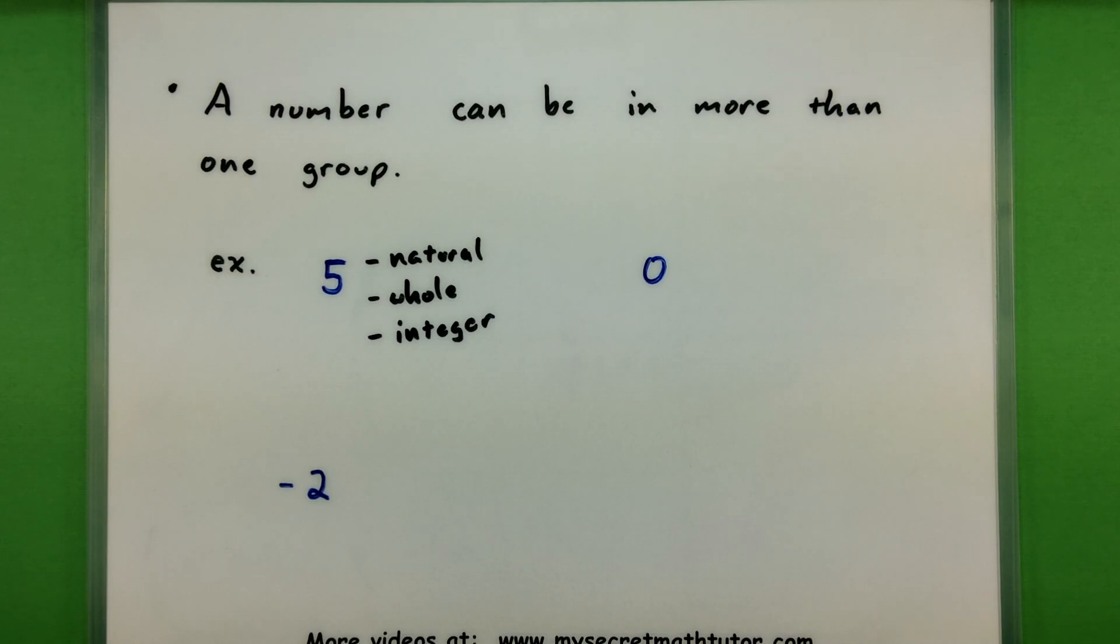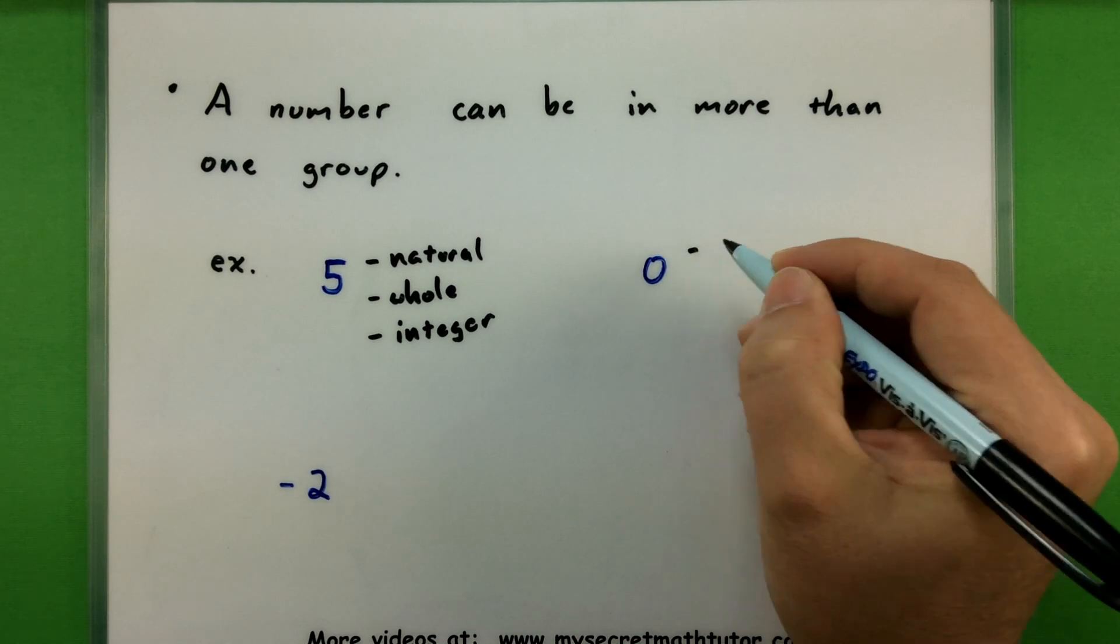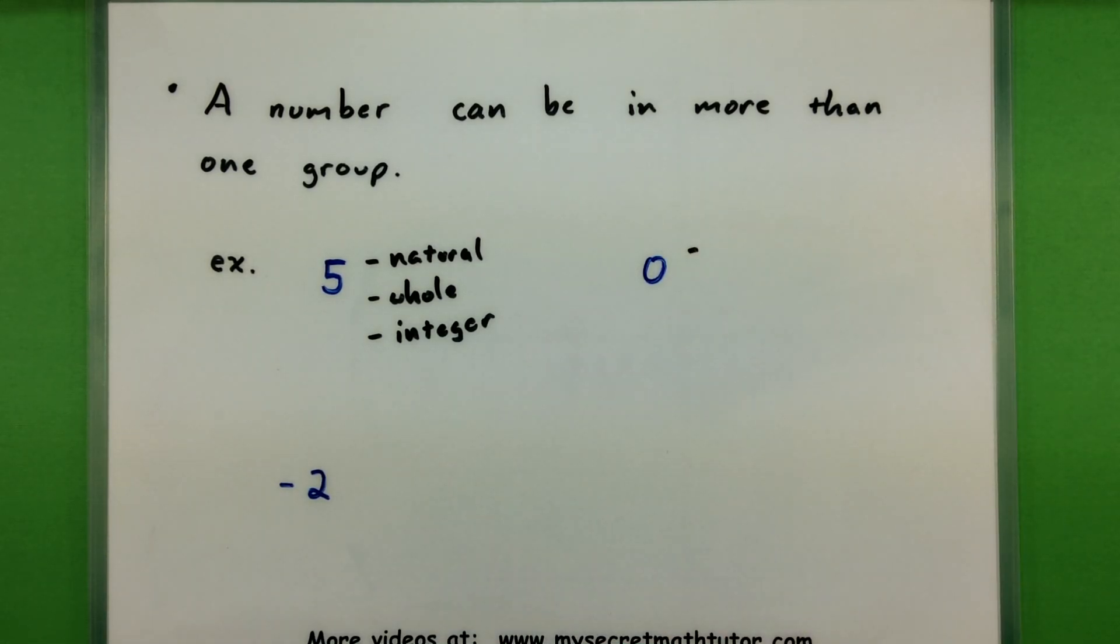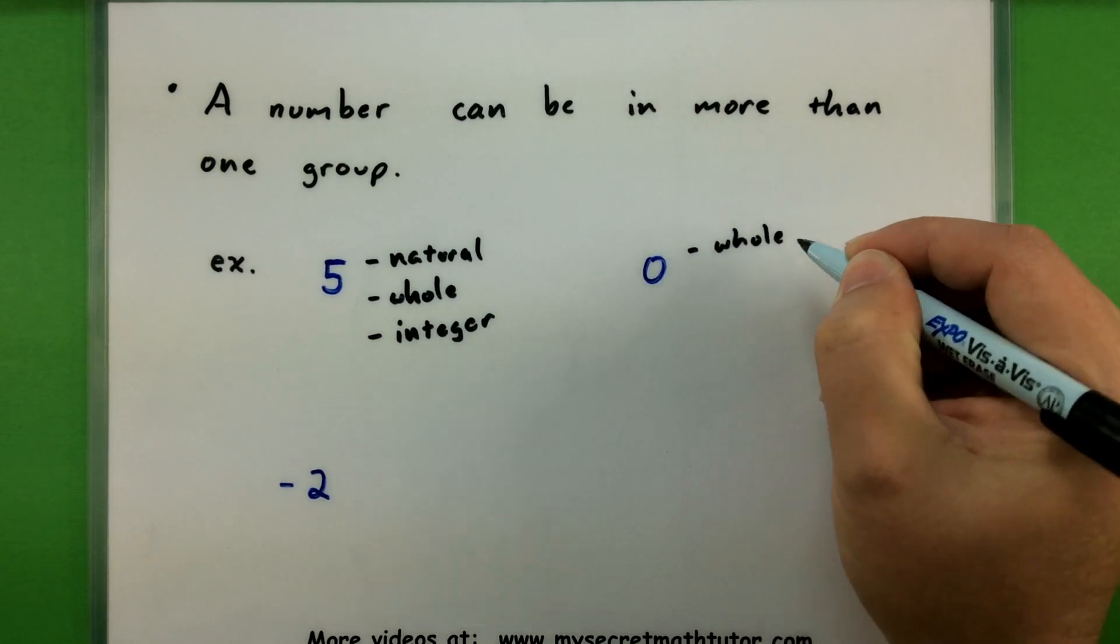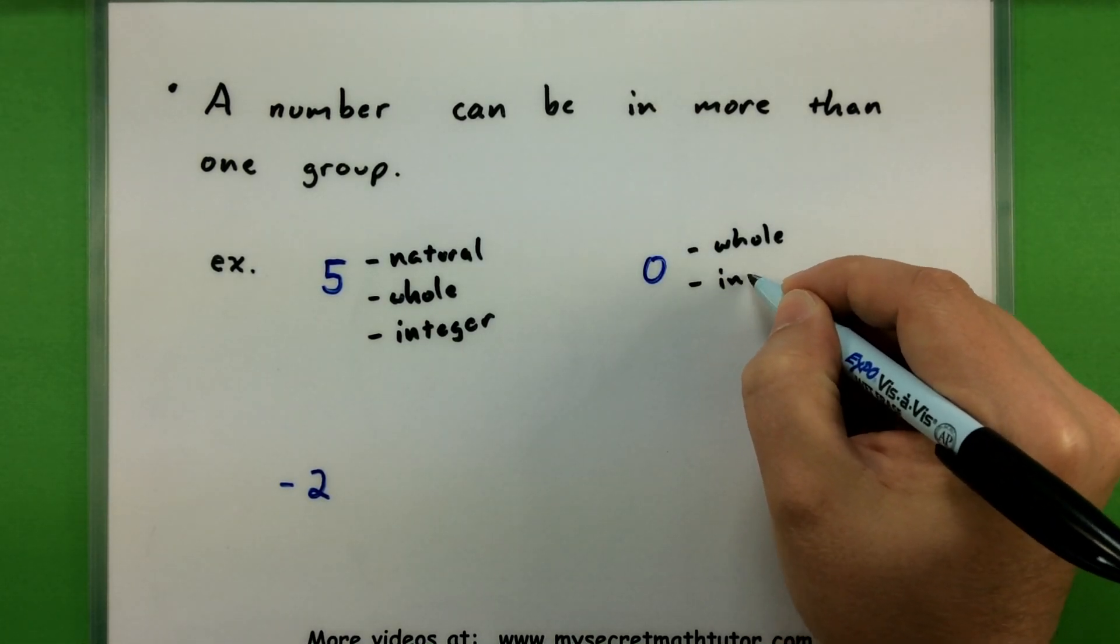Now some numbers are only in a few categories, so you want to make sure that you are familiar with those groups. So for example, if I get over to 0 here, 0 is not one of our natural numbers. It is a whole number. And of course it is one of our integers.